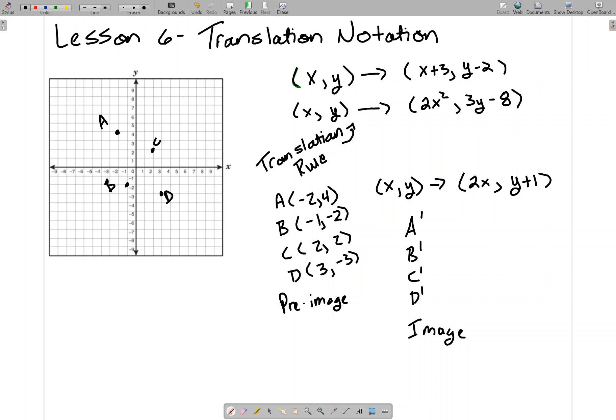Starting with A, I'm going to take my X value, negative 2, and plug it into this formula. So 2 times negative 2 is negative 4, and Y plus 1 would be 5. So that's where A prime is. I'm going to use green to mark the prime points. I've got negative 4, positive 5, which is right here. A prime. B prime is going to go to negative 1 times 2 is negative 2, and then negative 2 plus 1 is negative 1. C prime is going to go to 4, 3.